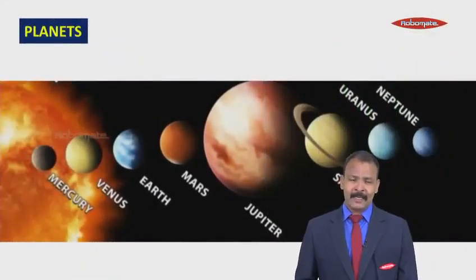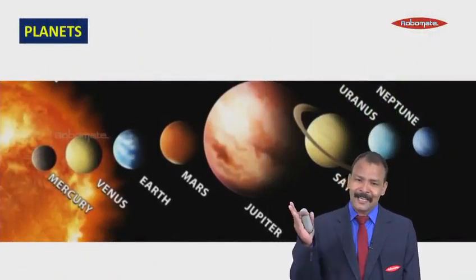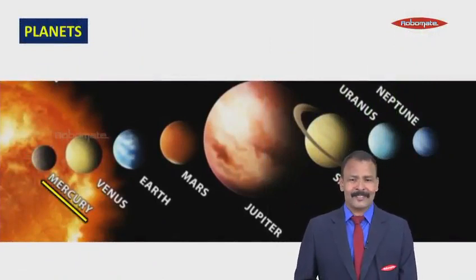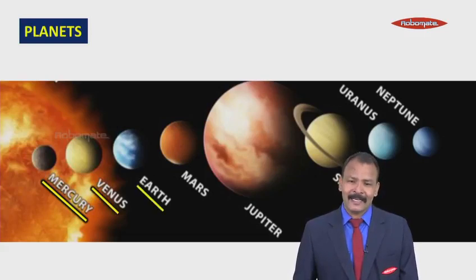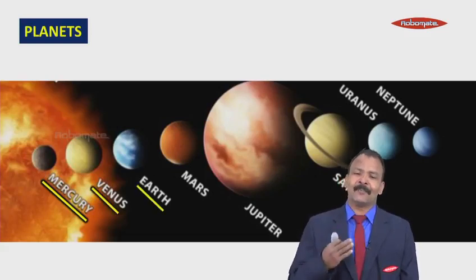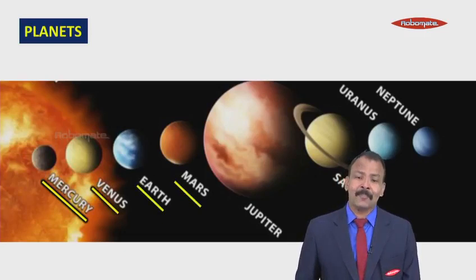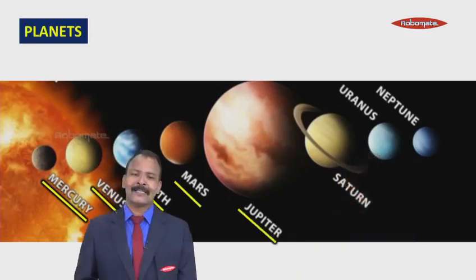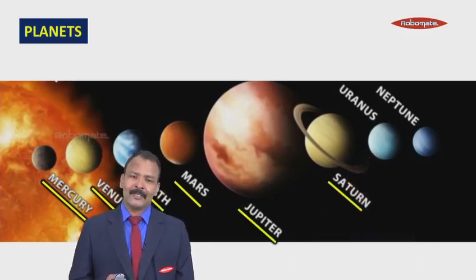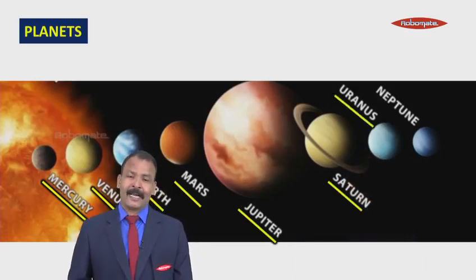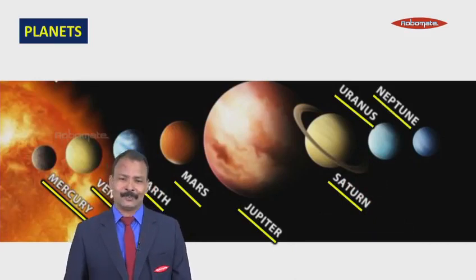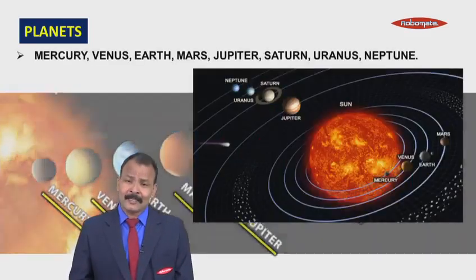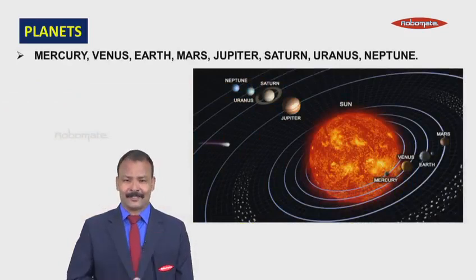Now the planets, coming to planets, the names of the planets are: the first one is Mercury, second one is Venus, then comes Earth our mother planet, then it is Mars, Jupiter, Saturn, Uranus, and finally it is Neptune. So these are the planets, eight planets.